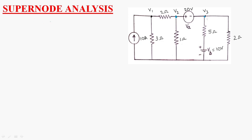So we apply nodal analysis at node V1. Nodal analysis is nothing but KCL plus Ohm's law. V1 is a normal node. Current entering is 10 amperes, so: 10 equals V1 by 3 ohms plus V1 minus V2 by 2 ohms.